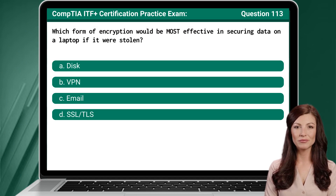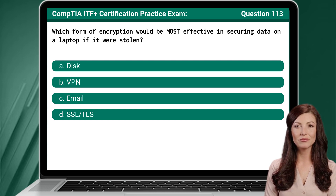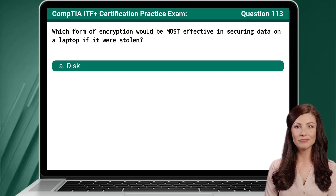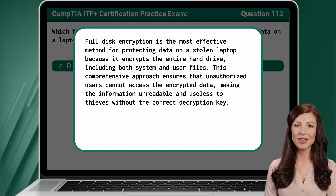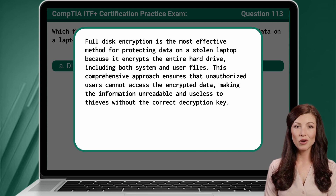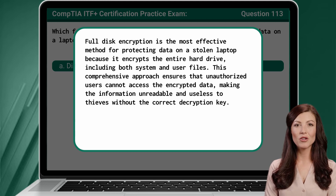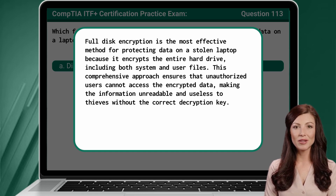Question 113. Which form of encryption would be most effective in securing data on a laptop if it were stolen? The answer is A: Disk. Full disk encryption is the most effective method for protecting data on a stolen laptop because it encrypts the entire hard drive, including both system and user files. This comprehensive approach ensures that unauthorized users cannot access the encrypted data, making the information unreadable and useless to thieves without the correct decryption key.